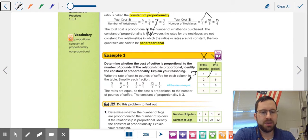3 divided by 1 is 3, 6 divided by 2 is 3, 9 divided by 3 is 3, and 12 divided by 4 is 3. Since all of these quotients are 3, this is a proportion, and the constant of proportionality, which is a unit rate, is 3. That's your constant of proportionality.